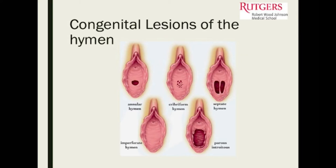The septate hymen — those patients usually have menstrual bleeding because there is enough of an opening. Those patients are usually the ones who have problems inserting tampons, but more often removing tampons, because the tampon gets stuck on that band of the hymen.